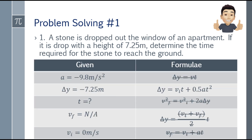Labeling the given: we're looking for time. Final velocity is not applicable since it's neither asked nor given. Initial velocity is 0 meters per second because it's dropped.